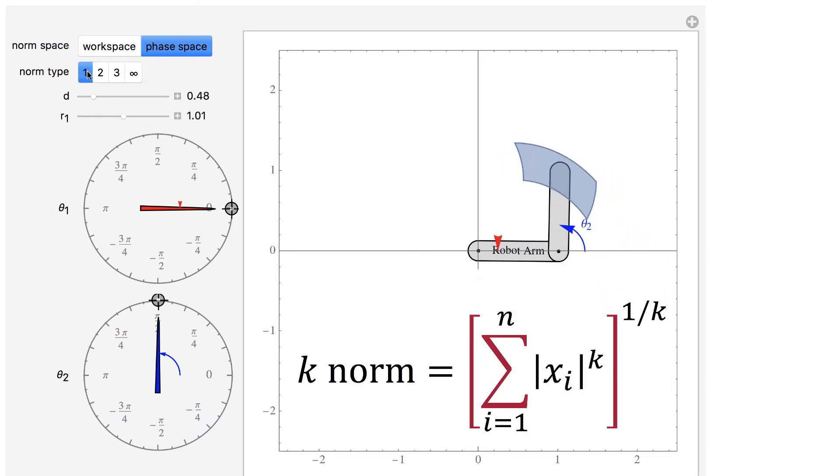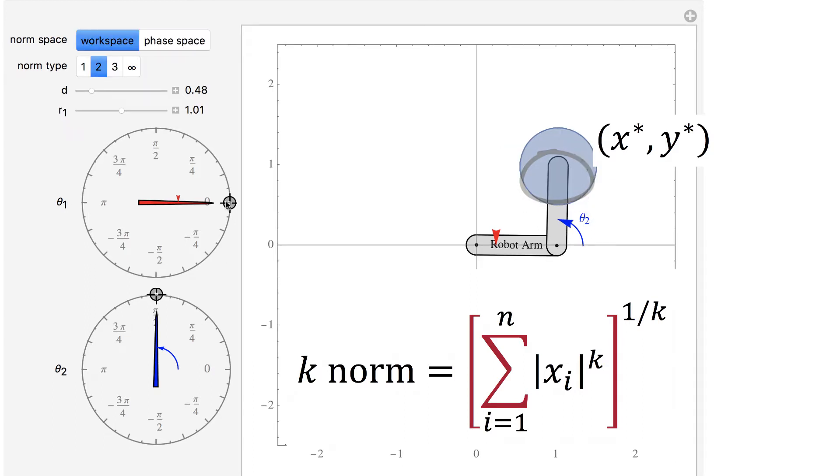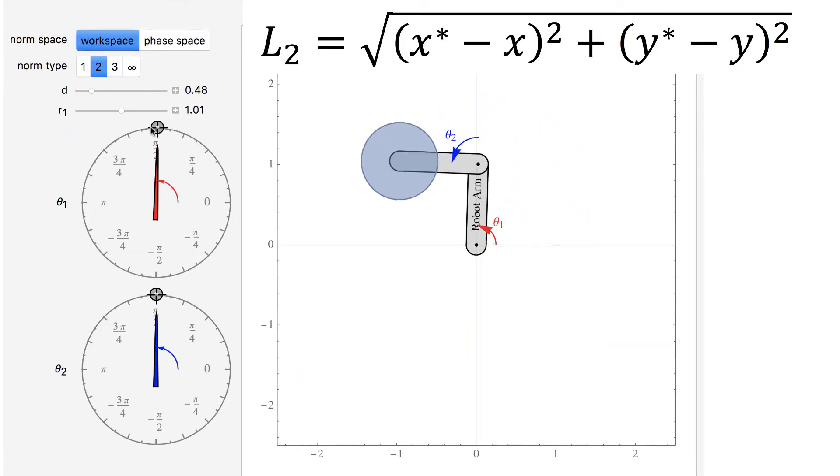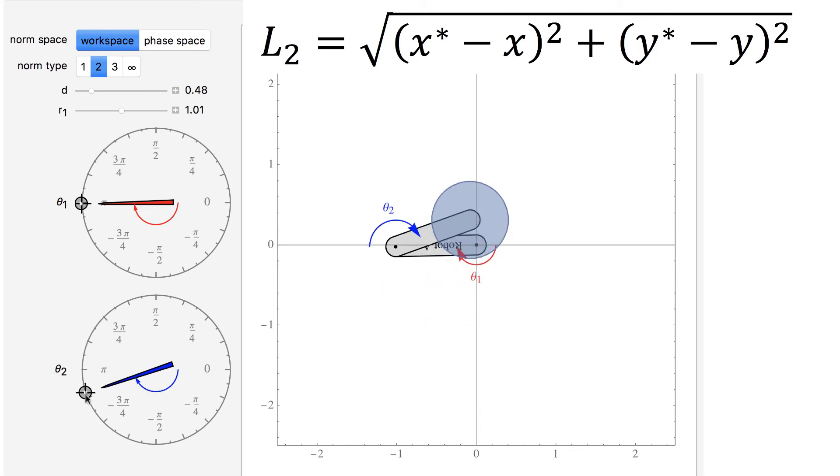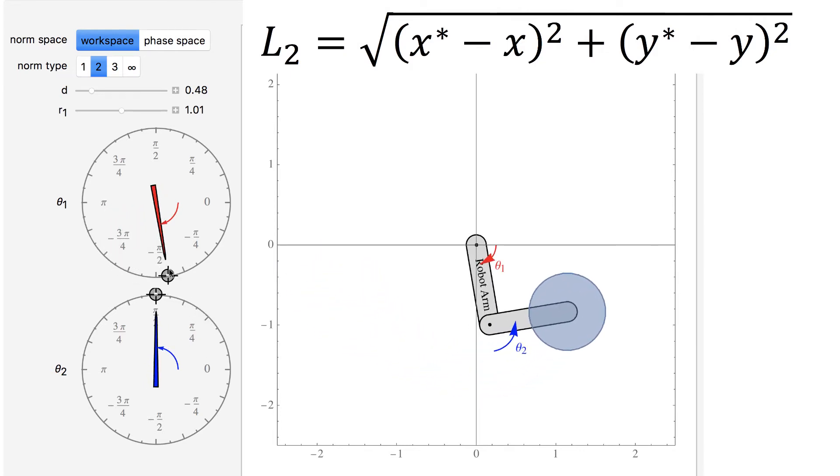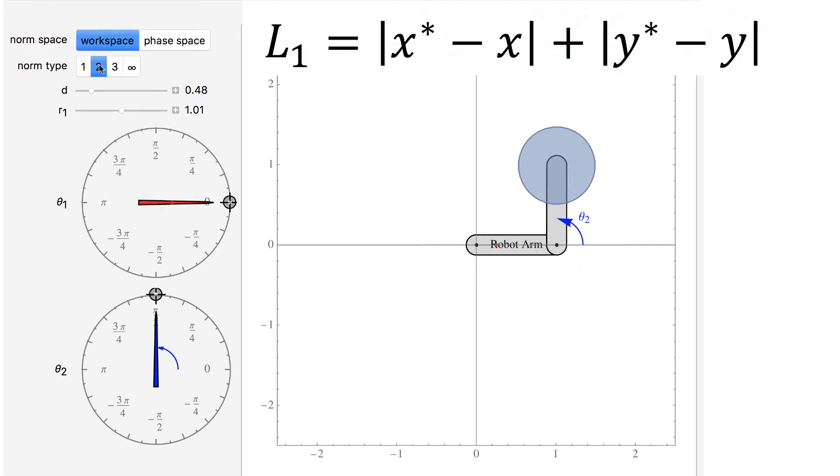You can set the norm type to 1, 2, 3, or infinity. The 2-norm is the distance you probably are most comfortable with. It is a straight-line distance, which is computed by squaring the distance in x and y, adding them together, and taking the square root. The set of points closer than d with a 2-norm is always a disk.